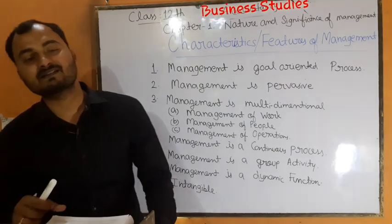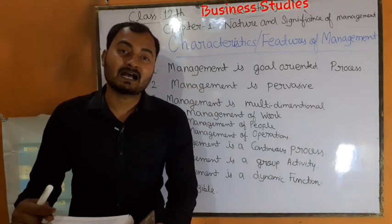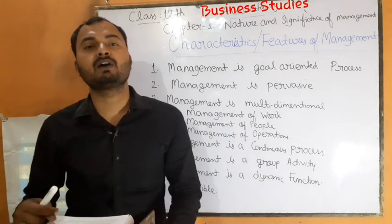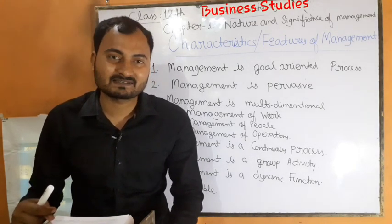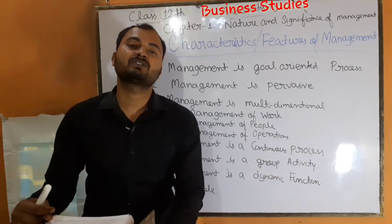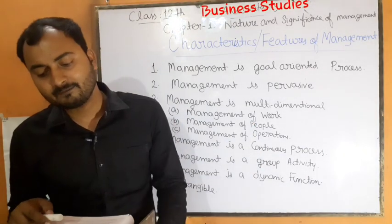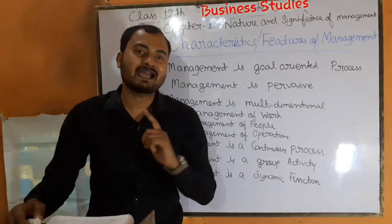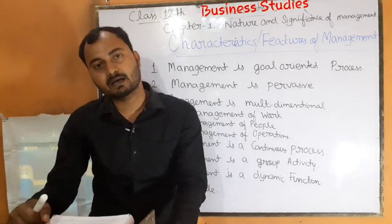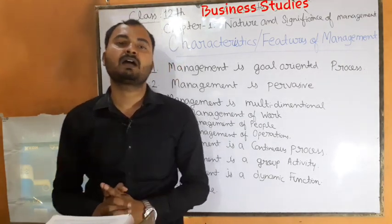The first point is: management is a goal-oriented process. Goal-oriented का मतलब है objective-centered। Management का main aim क्या होता है कि जो organization के goals हैं उन्हें achieve करना। इसलिए पहला point है — management is a goal-oriented process. Management always aims at achieving the organizational goal.